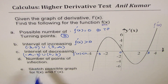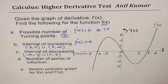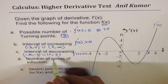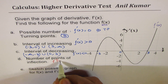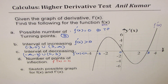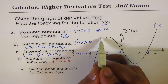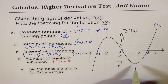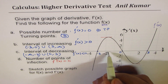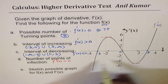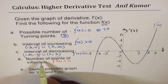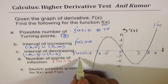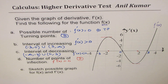Number of points of inflection: points of inflection occur when the second derivative is equal to zero. Looking at the derivative graph, the turning points of the derivative correspond to where the second derivative is zero. So the number of points of inflection is two.